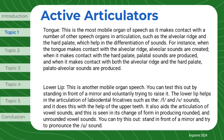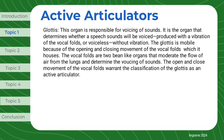You can try this out — stand in front of a mirror and try to pronounce the sound. The glottis is responsible for the voicing of sounds. It is the organ that determines whether a speech sound will be voiced, produced with a vibration of the vocal folds, or voiceless, without vibration. The glottis is mobile because of the opening and closing movement of the vocal folds which it houses. The vocal folds are two bean-like organs that moderate the flow of air from the lungs and determine the voicing of sounds. The open and close movement of the vocal folds warrants the classification of the glottis as an active articulator.